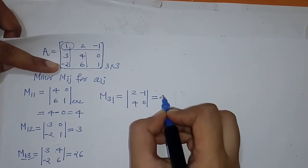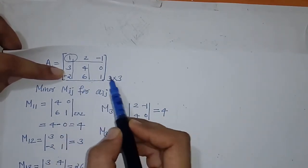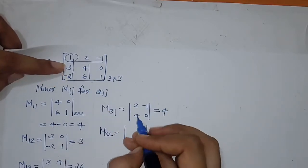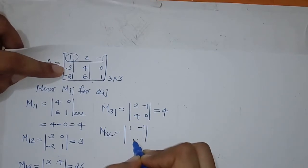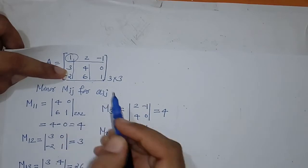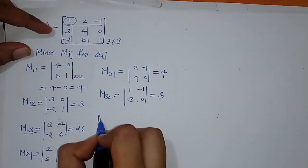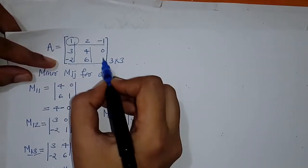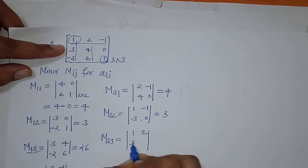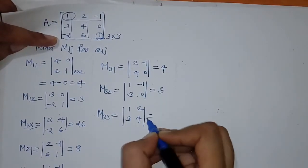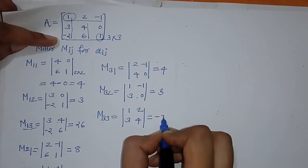For M_31, after simplification we get 0, and minus minus gives plus, so M_31 equals 4. For M_32, excluding row 3 and column 2, we write elements 1, minus 1, and simplify. Then for M_33, excluding row 3 and column 3, the remaining elements give simplification 4 minus 6, which equals minus 2.